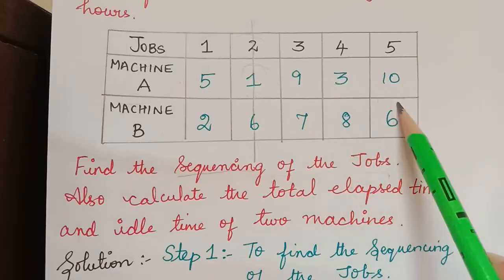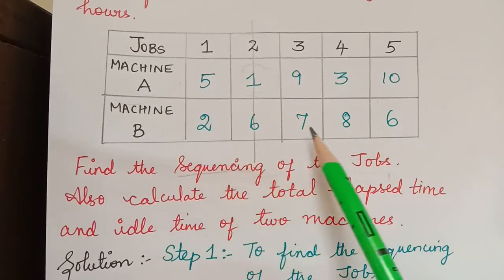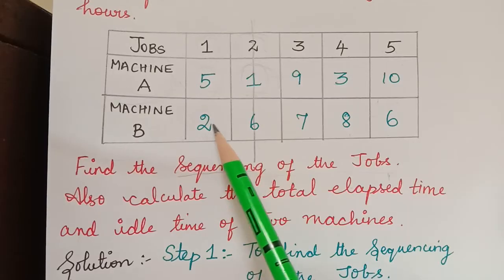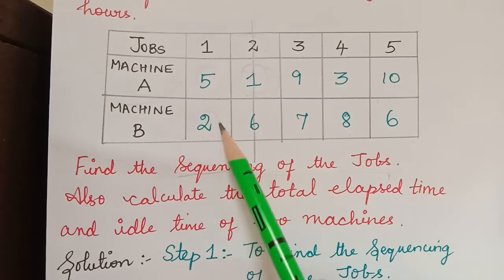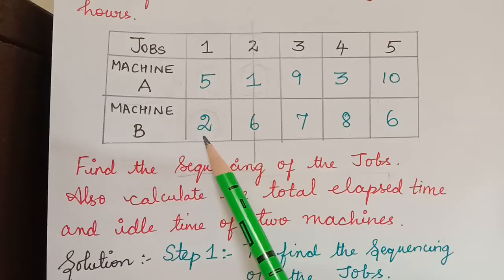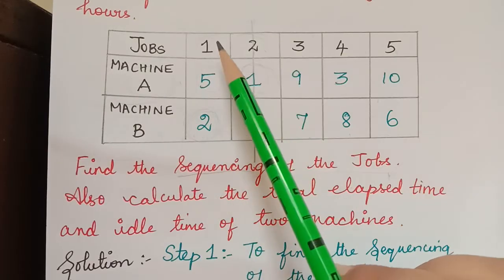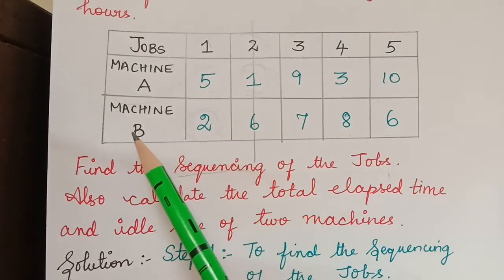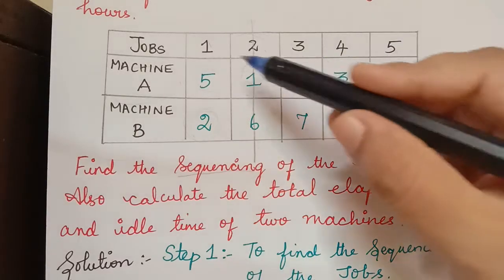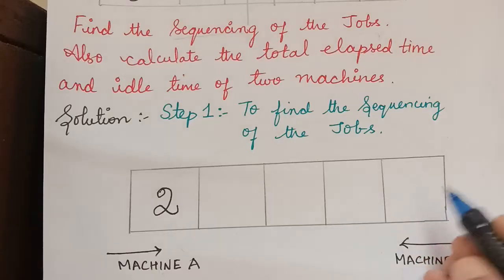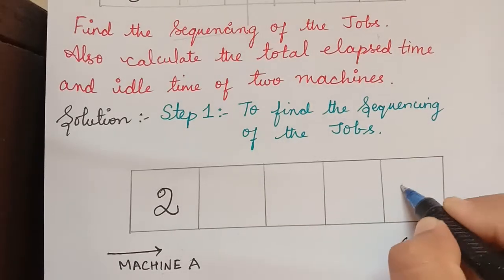Now out of the remaining values, we check which is the least. The next least value is 2. This processing time of 2 is the next least, and the job corresponding to it is job 1. The machine corresponding to it is machine B.